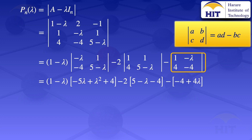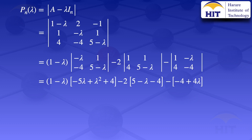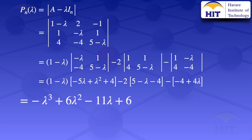So that is after evaluating those 2 by 2 determinants. What is now left is for us to expand that expression. When we expand it, we get minus lambda cubed plus 6 lambda squared minus 11 lambda plus 6. So that is the characteristic polynomial of the given matrix A.